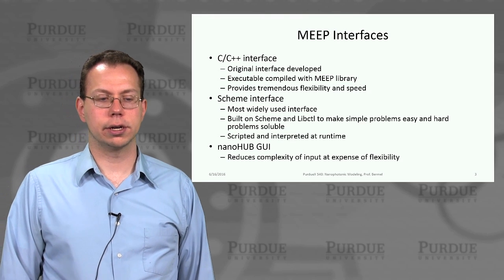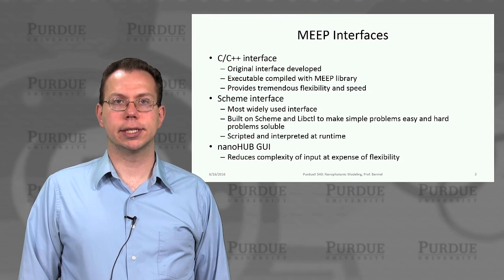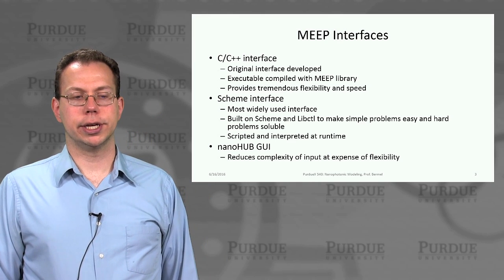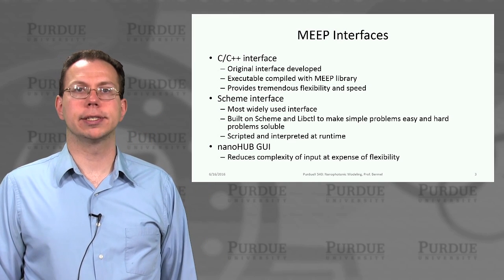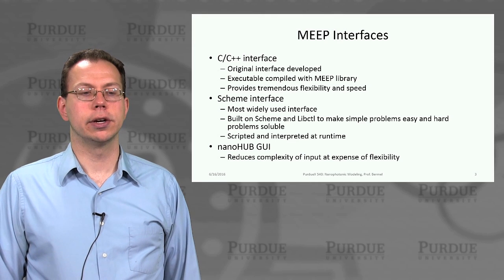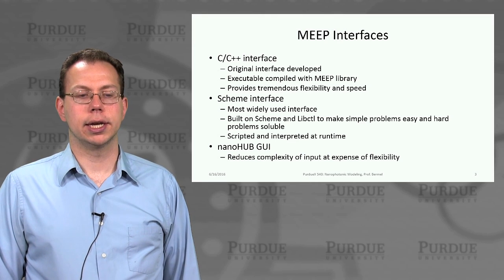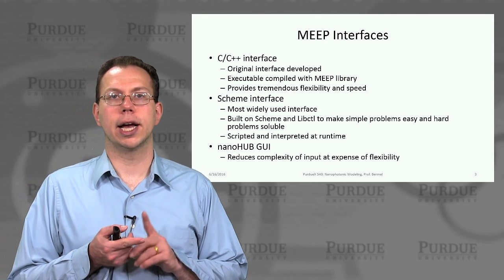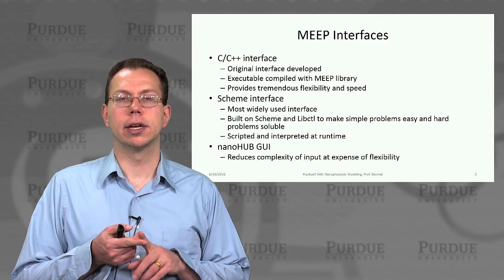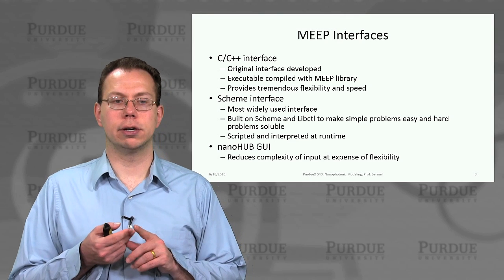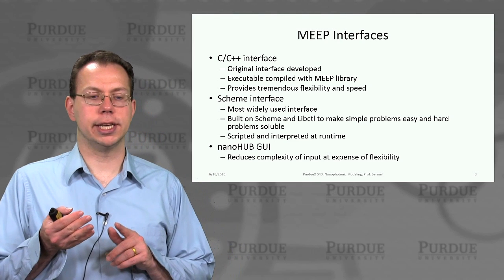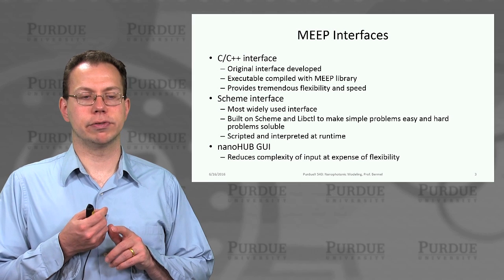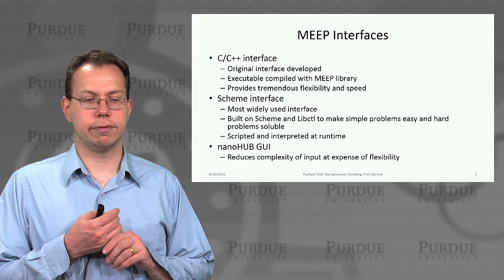There are three interfaces of note. The first, not as well known, is the C/C++ interface, which was the original one developed. You have a set of member functions for MEEP that are called by an ordinary C program linking to the MEEP library. This is actually the most flexible option for using MEEP.